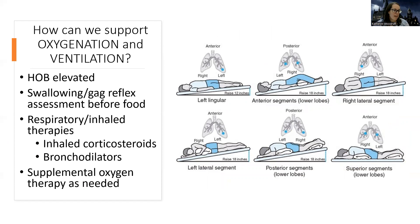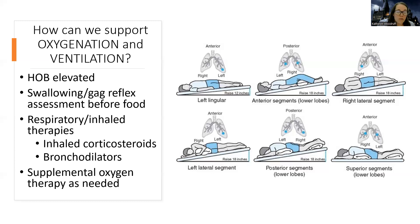To support oxygenation and ventilation, keep head of bed elevated — sitting upright allows the back to expand too, which really helps ventilation. Check swallowing and gag reflex before food to prevent aspiration pneumonia, especially important in stroke patients. Patients may receive inhaled respiratory therapies like steroids or bronchodilators, and supplemental oxygen as needed.